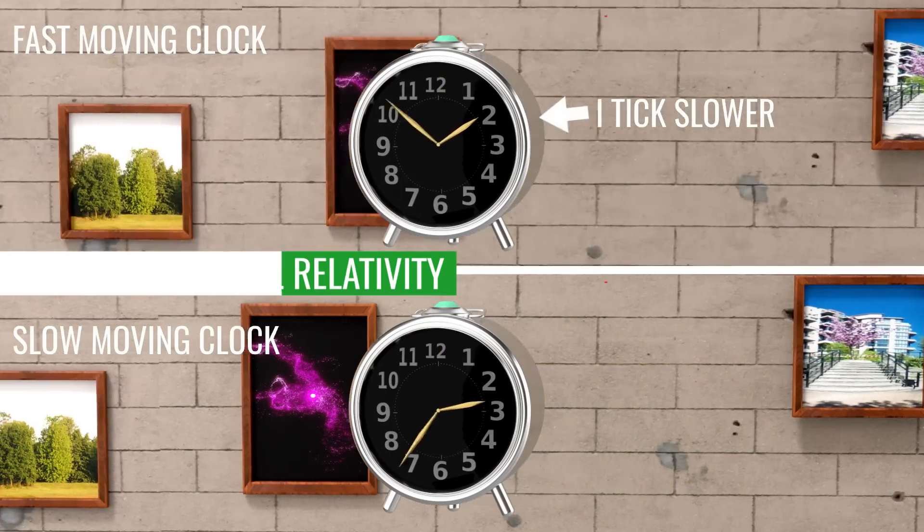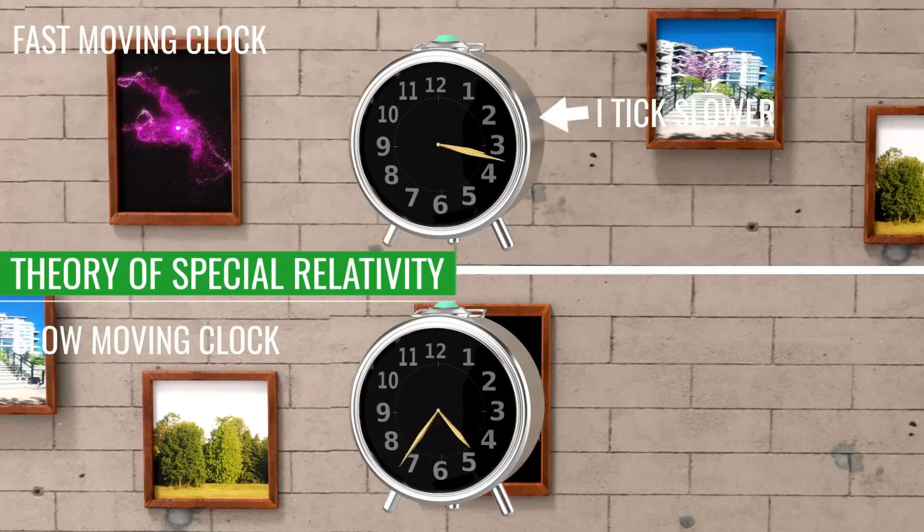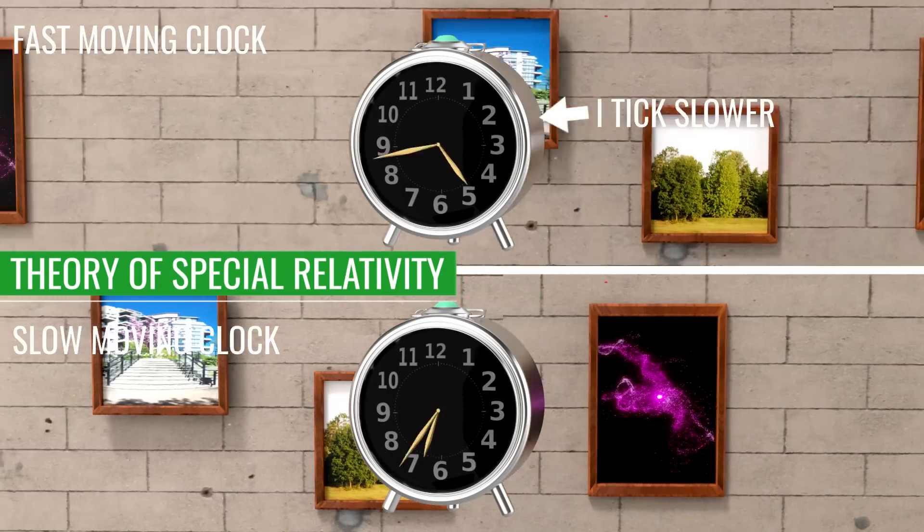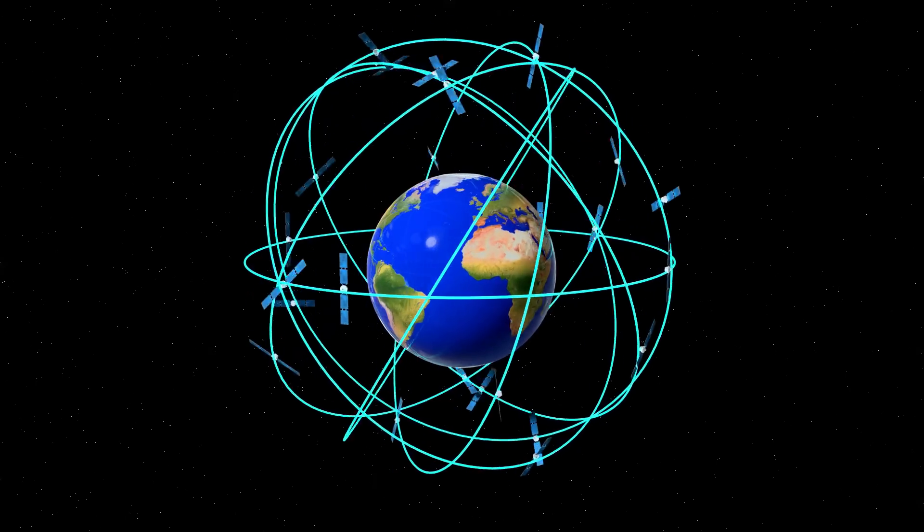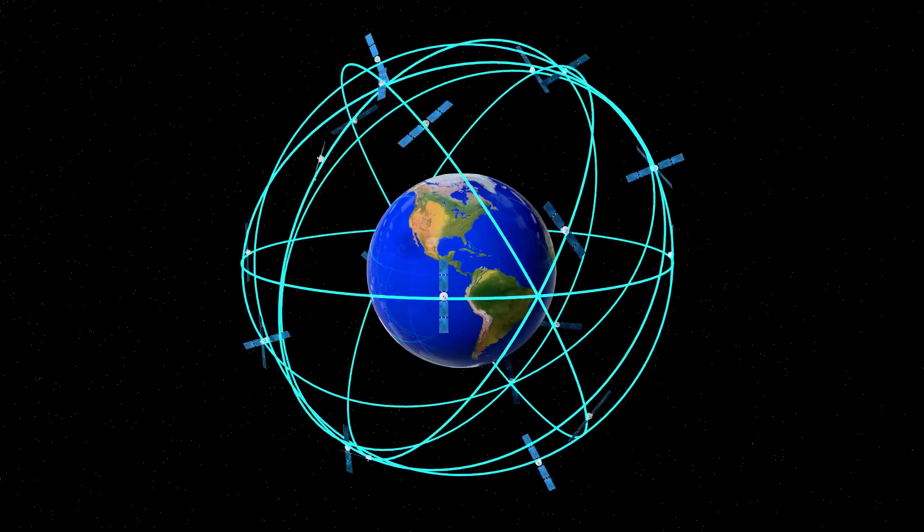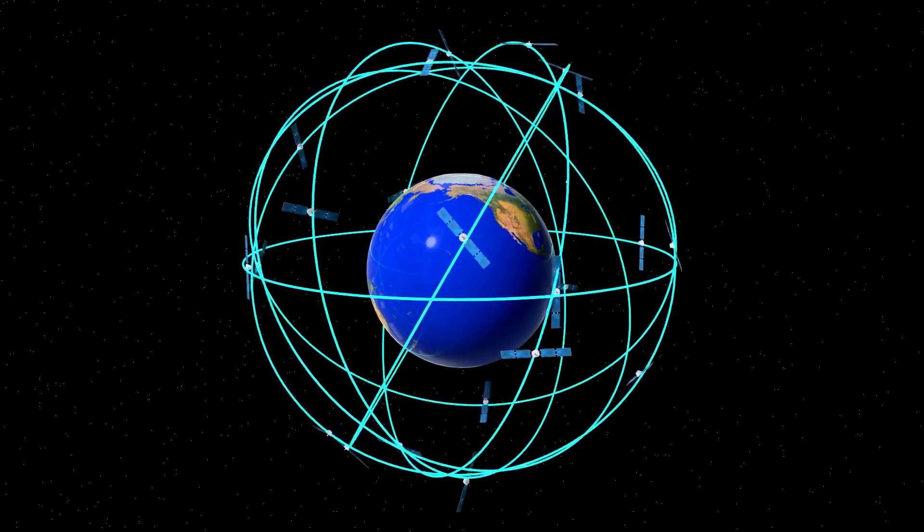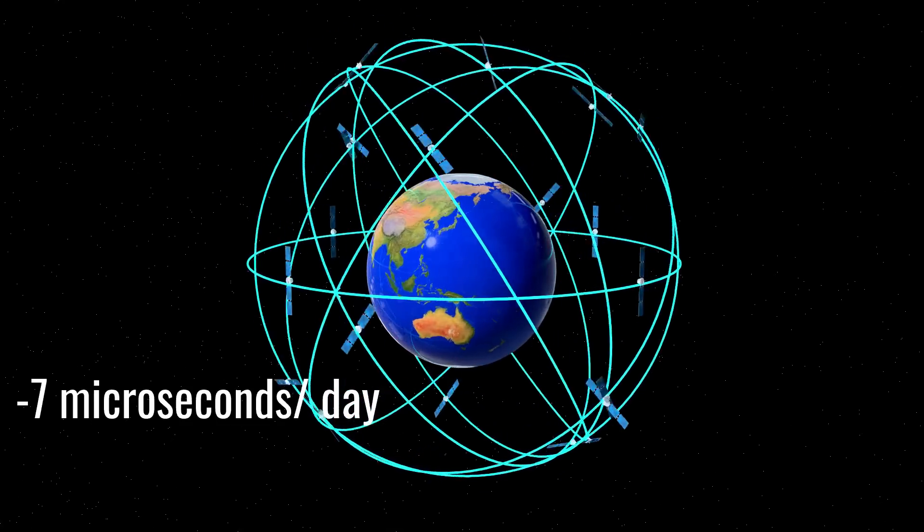According to the theory of special relativity, a fast-moving clock will slow down. The atomic clocks, which are moving at a speed of 14,000 km per hour, will slow down by 7 microseconds every day due to this.